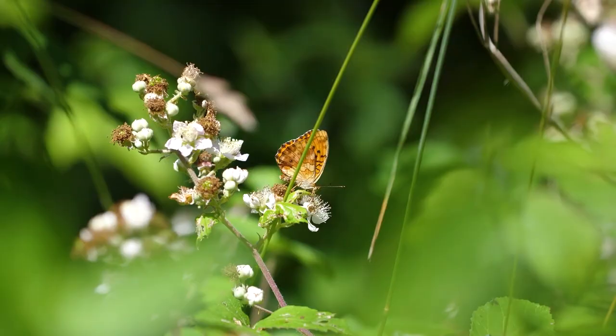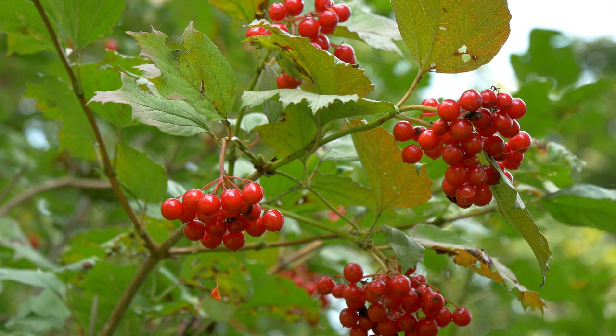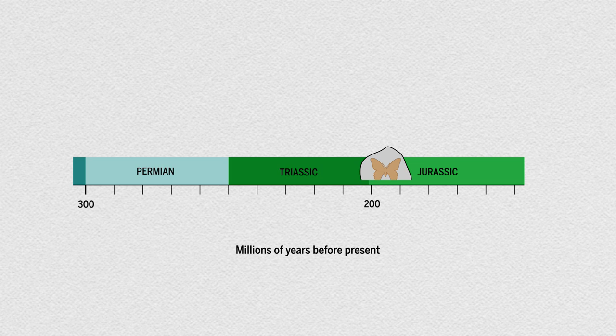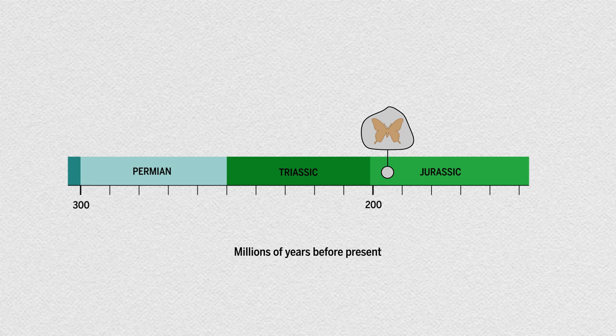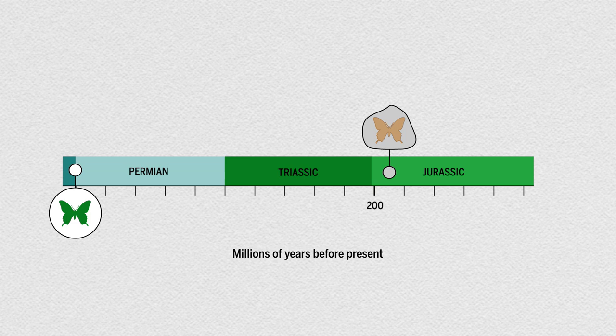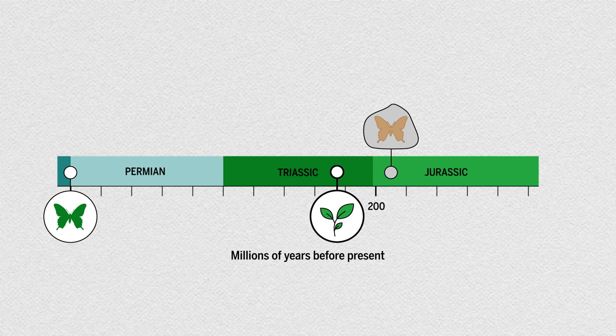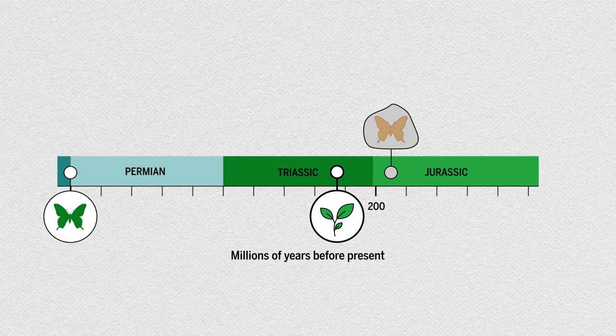Another clue to this mystery comes from the flowering plant's helper: pollinators, including butterflies and bumblebees. As with angiosperms, recent molecular evidence has placed the origin of pollinating insects further back than the fossil record. The earliest fossil evidence for Lepidoptera — an order of insects which includes butterflies and moths — was from 195 million years ago. But molecular analyses suggest that they've been around since 300 million years ago, predating the new estimate of the origin of angiosperms by tens of millions of years.